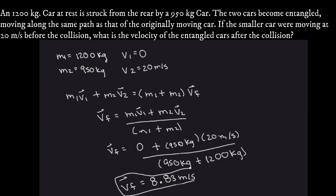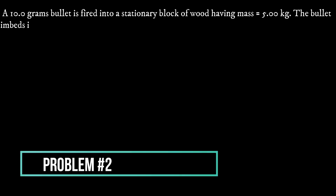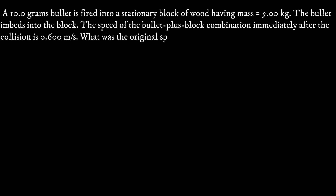Problem number two: A 10-gram bullet is fired into a stationary block of wood having a mass of 5 kg. The bullet embeds into the block, and the speed of the bullet-plus-block combination immediately after the collision is 0.600 m/s. What was the original speed of the bullet? This is similar to problem one but we're solving for the initial velocity of the bullet, and we already have the final velocity. It is also a perfectly inelastic collision since the two objects stick together and continue with one final velocity.